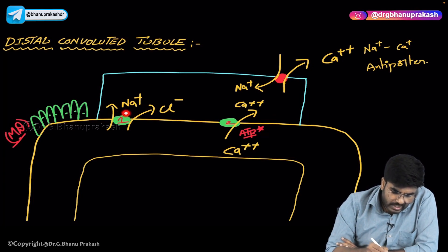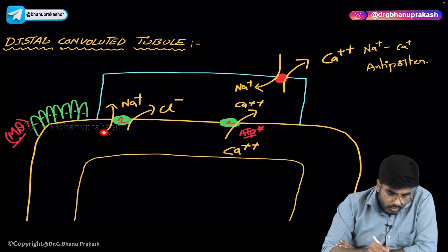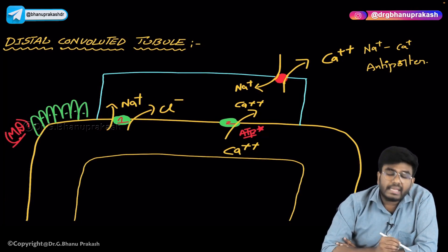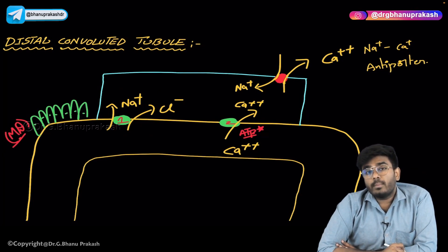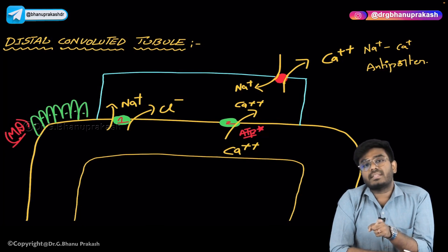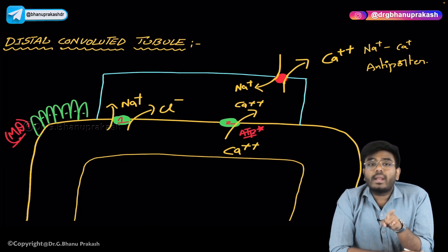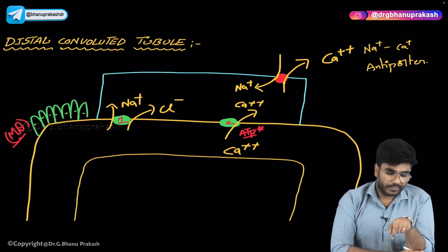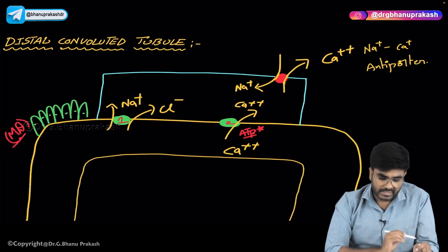The first transporter on the DCT is reabsorbing sodium along with chloride ions. Sodium and chloride are being reabsorbed in the DCT with the help of this transporter, so we call it a sodium-chloride symporter. Remember, we discussed the sodium-potassium-2-chloride symporter in the ascending limb of loop of Henle — that is totally different. Transporter number one is a sodium-chloride symporter because the movement of ions is in the same direction.